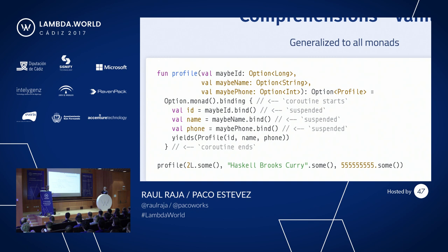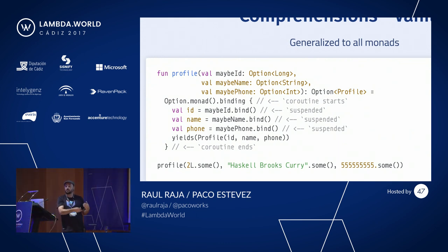This was very interesting to us because when we were trying to encode this in Kotlin, we found that Kotlin actually provided us more tools than Scala, since for-comprehension is a Scala built-in language feature. In Kotlin, because we have coroutines, we can do a lot more powerful stuff than just flatMap over the data type.